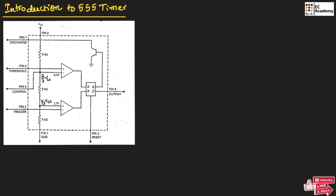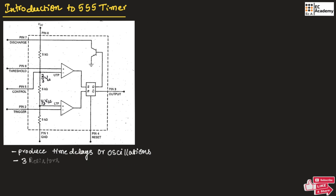The 555 timer can produce accurate and highly stable time delays or oscillations. It consists of three resistors, each of 5 kilo ohm, hence it is known as the 555 timer.